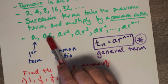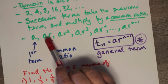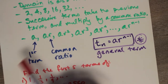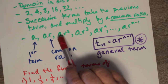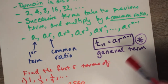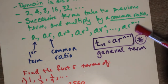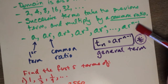So the second term is a times r to the 1, the third term is a times r to the 2, and we keep going. So where we have a times r to the n minus 1, this must be the nth term. We also use the nth term as the formula for the general term.